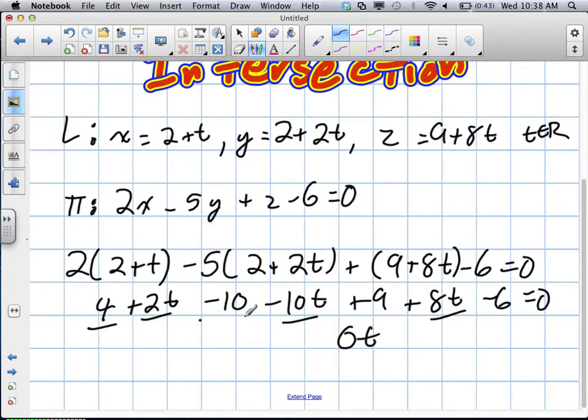4 minus 10 gives us negative 6 plus 9 is positive 3. Minus 6 is negative 3 is equal to 0. 0t is equal to negative 3.